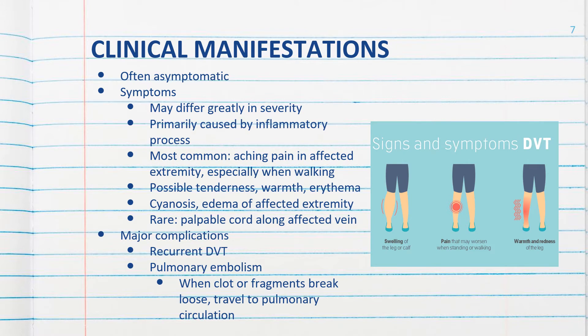Many patients with DVTs experience no symptoms at all — therefore we call them asymptomatic. When symptoms are present, they may differ greatly in severity. The signs and symptoms of DVT are primarily caused by the inflammatory process that accompanies the thrombus. An aching pain in the affected extremity, especially when walking, is the most common symptom. A dull or tight feeling in the calf is also common.